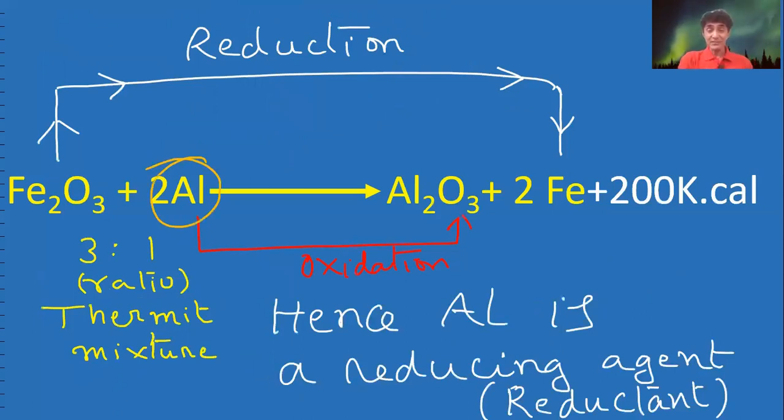Aluminum metal is reducing the ferric oxide. Reducing means removing oxygen. Iron oxide changes into iron. That is reduction. Who is helping to reduce? It's aluminum. So, aluminum is called reducing agent.